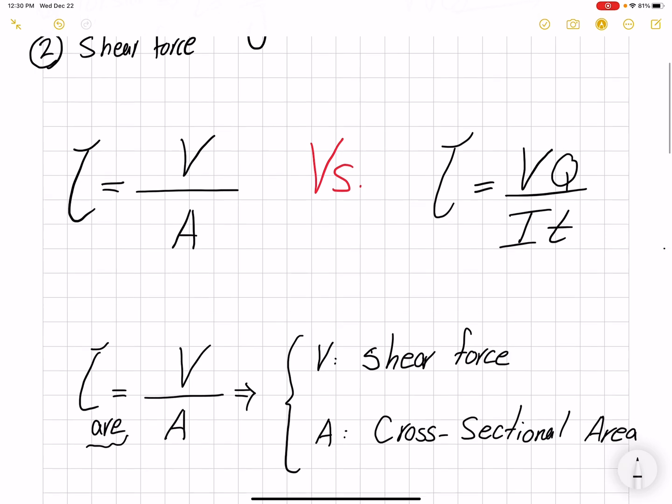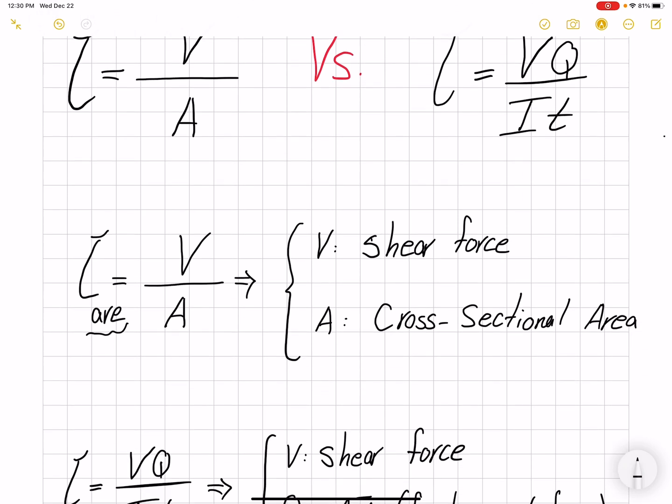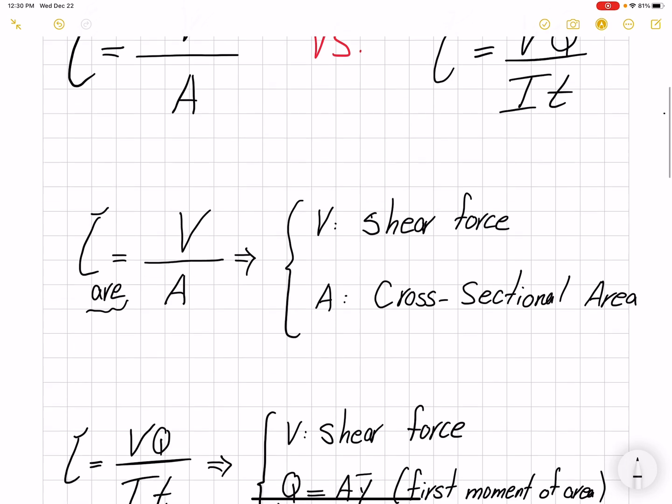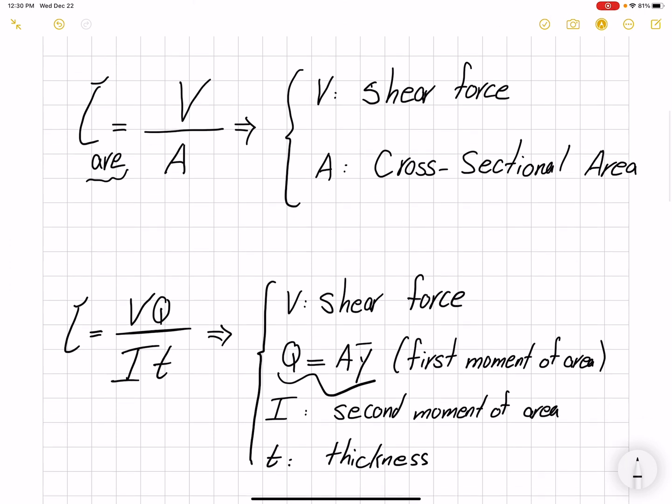The difference is pretty simple. V over A is a simpler equation, it just tells us the average shear stress across the cross-section. And VQ/IT gives us the shear stress at any desired location across our cross-section.